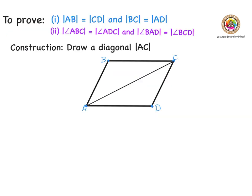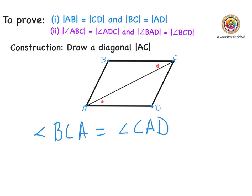The first thing I notice about the parallelogram now is that I have a nice Z shape. That means I know I have alternate angles when I have that Z shape, so this angle here is equal to this angle here. So: angle BCA is equal to angle CAD. Putting in the reason in brackets: alternate angles, because of the Z shape.